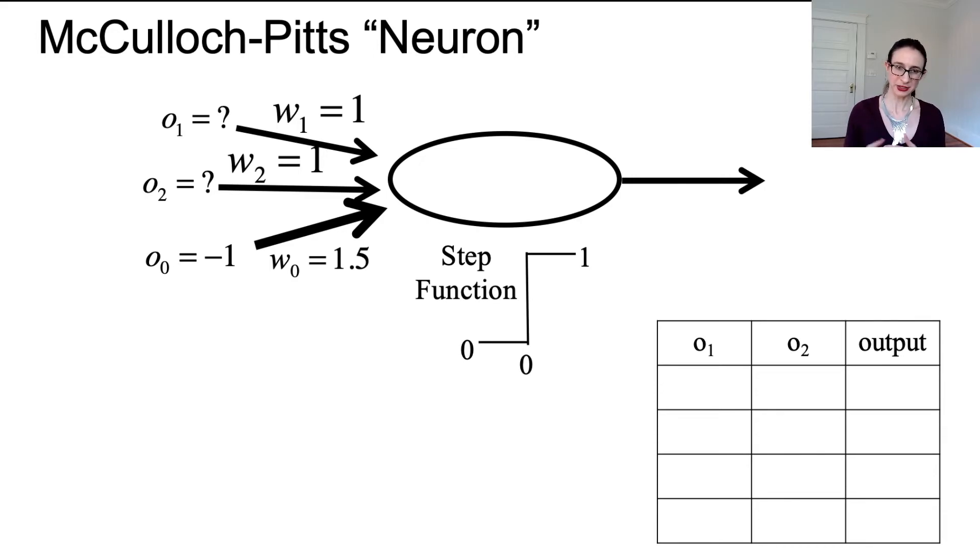We're going to work with the step function and feed in the outputs of other neurons. There are three other neurons connecting to this neuron. Their weights are 1, 1, and 1.5. The third neuron whose output comes into me - that output is always negative 1. You can think about that as kind of like an intercept term for a linear model. It's just always minus 1. We're going to change up O_1 and O_2 and see what happens, see what this neuron actually computes.